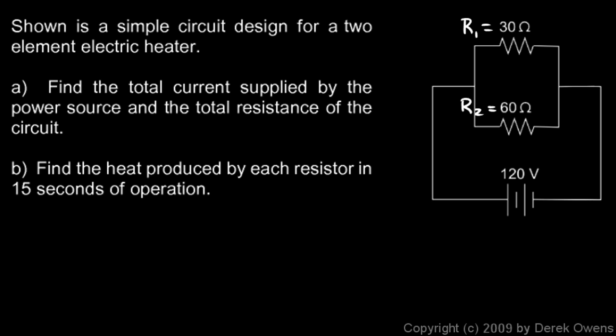I can calculate I1 and I2. I1 is going to be V1 over R1 and I2 is going to be V2 over R2. V1 and V2 are both 120 volts because these are in parallel with the battery.